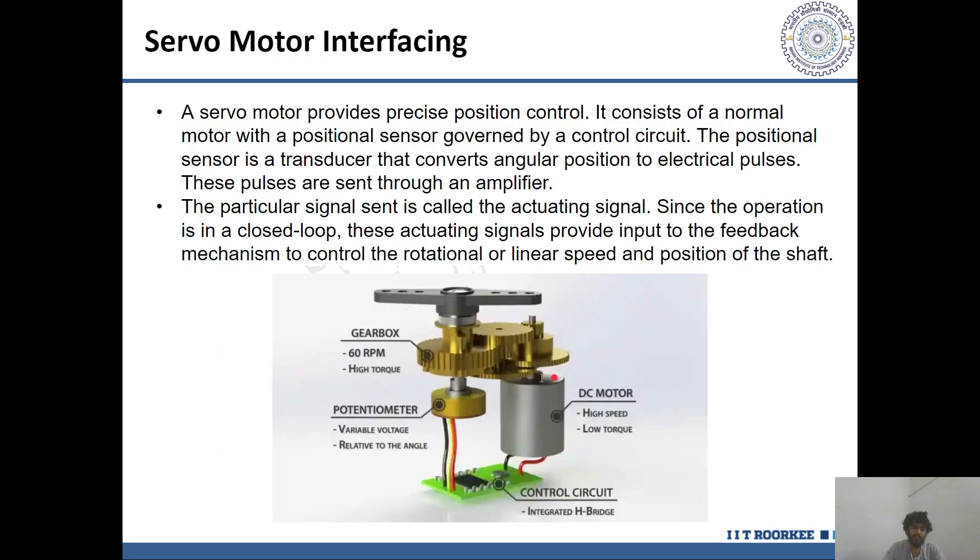Now, talking about the servo motor. A servo is basically a combination of motor, a shaft, a gear assembly, an amplifier and an encoder. It is a self-contained electrical device that rotates a machine or parts of a machine with very great precision and high efficiency. By controlling the position and the speed of the shaft, we can control the angle of the shaft with respect to stationary parts. The servo consists of a normal DC motor with a positional sensor which is governed by a control circuit such as an H-bridge. The positional sensor is a transducer that converts angular position to electrical pulses. These pulses are sent through the amplifier and are also called actuating signals. Since the operation takes place in a closed loop, these actuating signals provide input to the feedback mechanism to control the rotational or the linear speed and the position of the shaft of the motor.